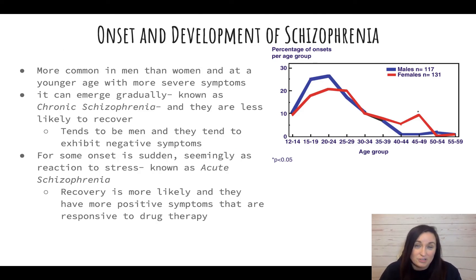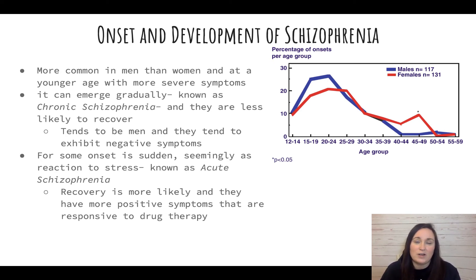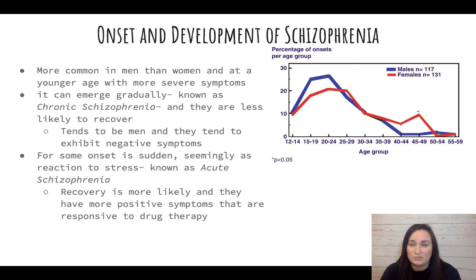Schizophrenia can emerge gradually, called chronic schizophrenia, in which case recovery is less likely and it's something the person deals with throughout life. This tends to be more common in men, and chronic schizophrenia tends to exhibit more negative symptoms. For some, onset is sudden after something very stressful — called acute schizophrenia — where recovery is more likely, positive symptoms are more common, and those positive symptoms respond better to drug therapy.